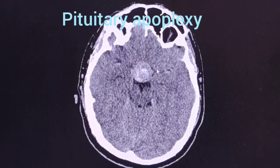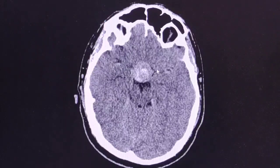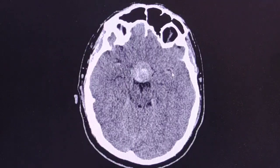Dear friends, hi! This is a case of a 32-year-old male patient who presented with acute onset severe headache, nausea and vomiting, and significant visual disturbances. A CT scan was done.